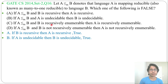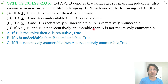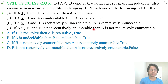Option C: if B is Recursive Enumerable then A is Recursive Enumerable — this is also True, directly from the Reducibility rule. Option D: if B is Not Recursive Enumerable then A is Not Recursive Enumerable — this is False. The actual rule is: if A is Not Recursive Enumerable then B is Not Recursive Enumerable. But here the reverse is given, that's why option D is False.